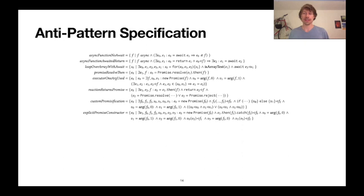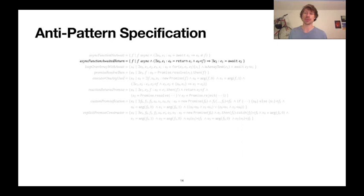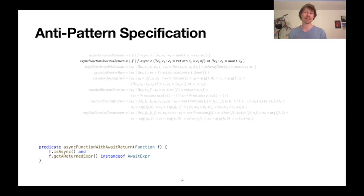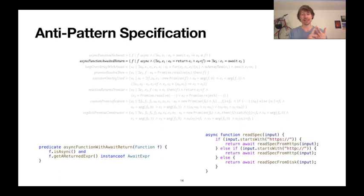Abstracting a little, we looked at a lot of code and came up with eight anti-patterns. The point I want to make is: let's focus on the async function with the awaited return anti-pattern — that was the first example I gave. For each of these anti-patterns, we wrote a CodeQL query. CodeQL is a static analysis language that lets you express analyses as queries over ASTs, data flow graphs, or control flow graphs. This query says the anti-pattern matches functions that are themselves async and have a returned expression that is an instance of an await expression — which matches the readSpec function we had earlier.